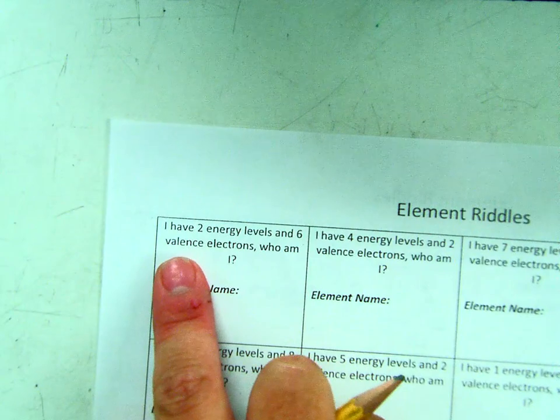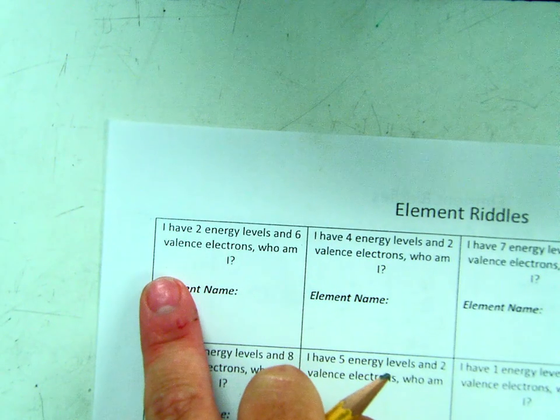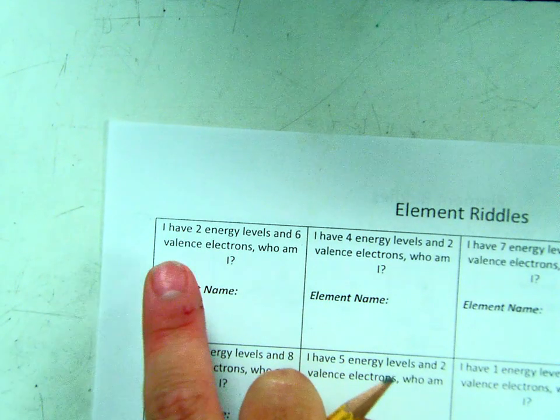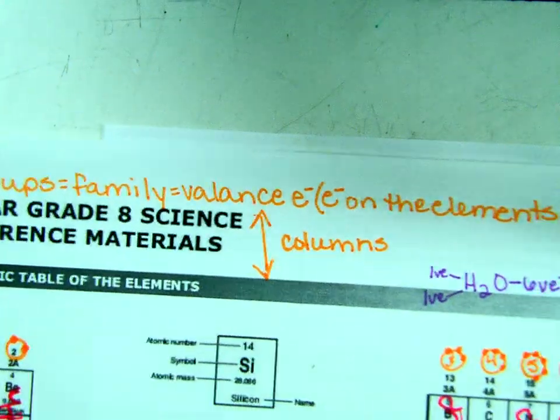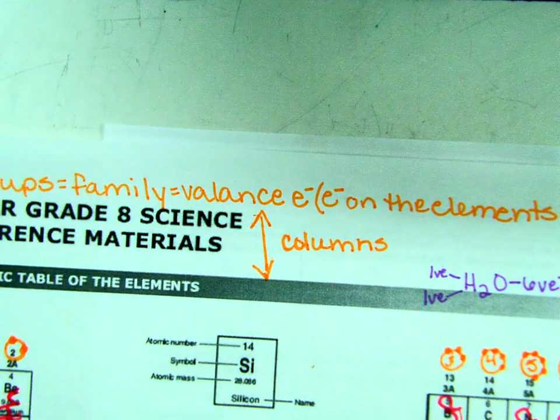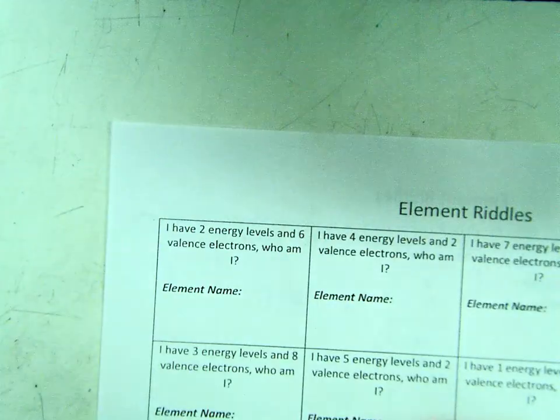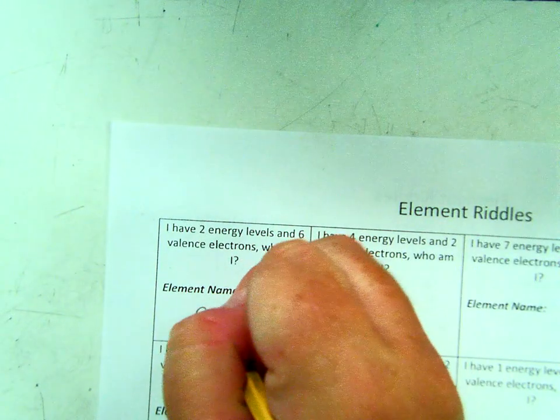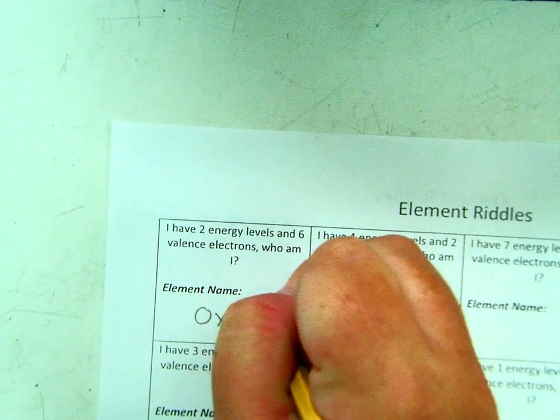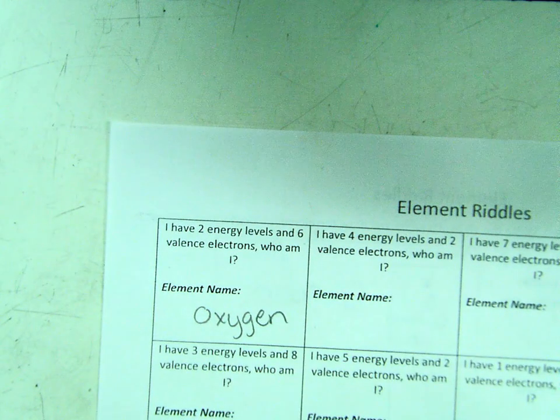It says I have two energy levels and six valence electrons. So two energy levels, six valence electrons, and I come across, and our answer is going to be oxygen. All right, and you're going to do the rest of these as well.